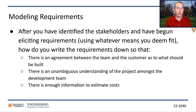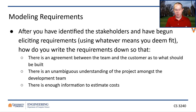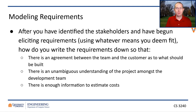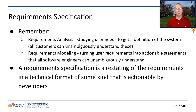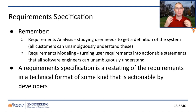So that process — requirements modeling or requirement specification — is the next phase. We've figured out who the stakeholders are and begun getting those requirements out, but now we need an agreement between the engineers and the customers as to what we're building, and then a process for converting that into something unambiguous for the developers. Requirements specification is that second phase — turning user requirements into actionable statements all software engineers can understand, restating requirements in a technical format.